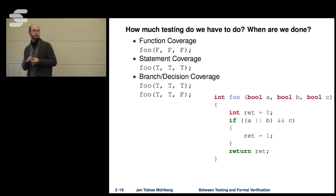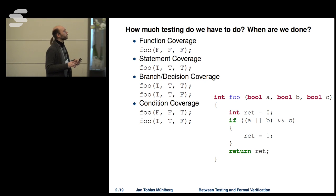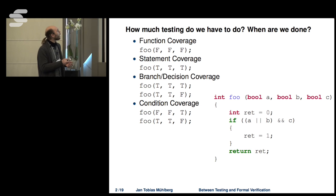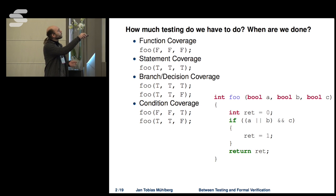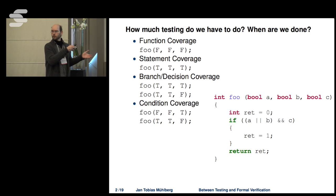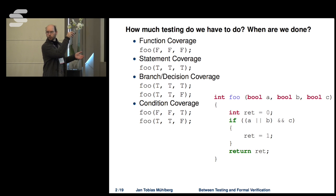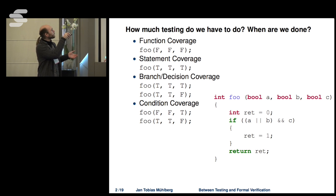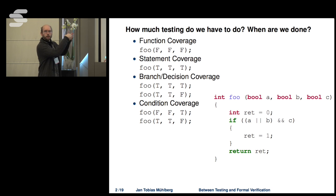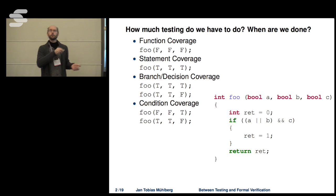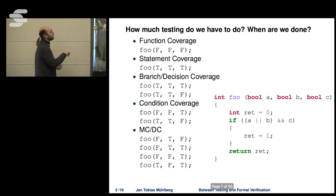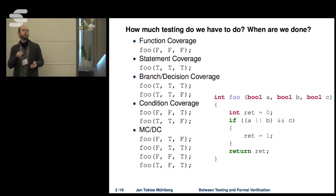For branch or decision coverage, you need two test cases: one covering the true branch and one where you set c to false for the false branch. Then there is condition coverage, where you test each individual boolean conditional to be true or false. Importantly, condition coverage does not imply branch coverage — you can alternate all conditionals without ever hitting the true branch.